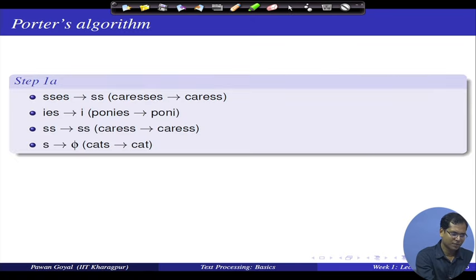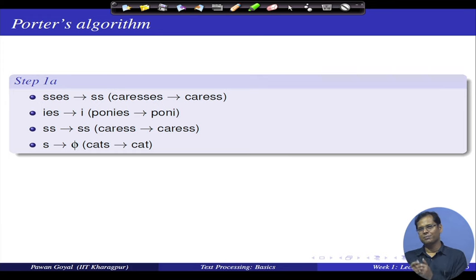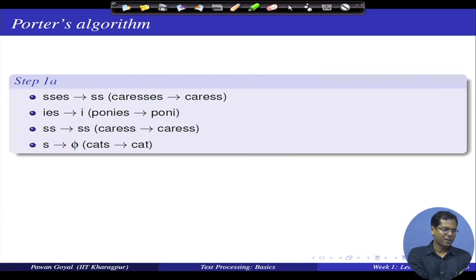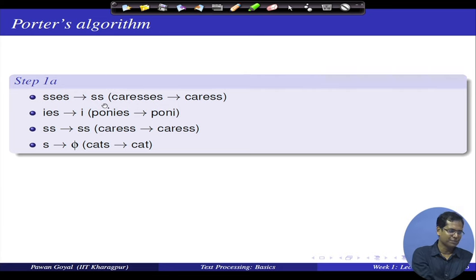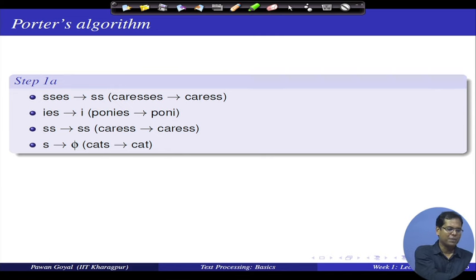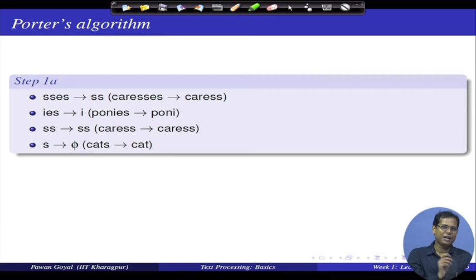The Porter stemming algorithm is a well-known rule-based stemmer for English. It uses a series of if-then-else rules. For example: if a word ends with 'sses,' replace with 'ss' — so 'caresses' becomes 'caress.' If it ends with 'ies,' replace with 'i' — so 'ponies' becomes 'pony.' If it ends with 'ss,' keep it as 'ss.' If it ends with a plain 's,' remove it — but 'caress' stays 'caress' because the double-s rule applies first.